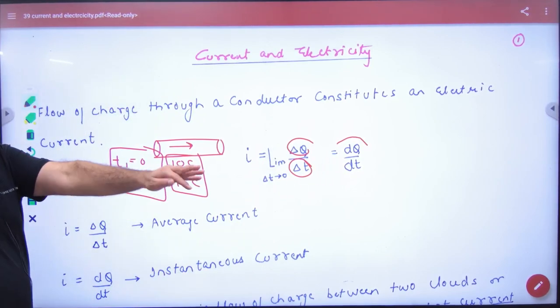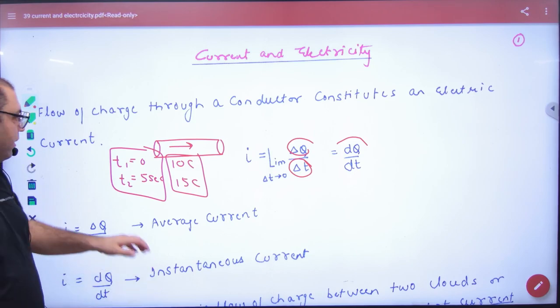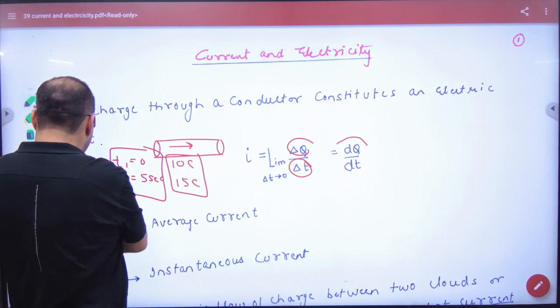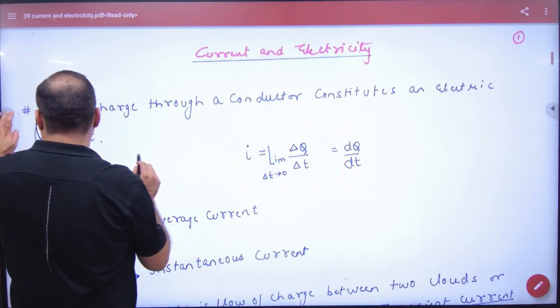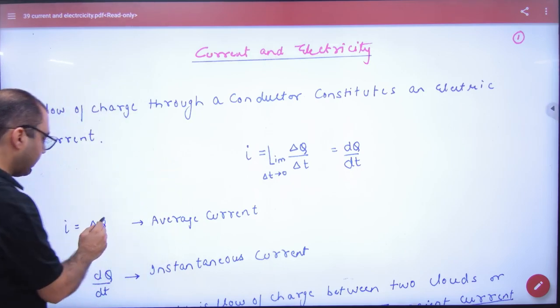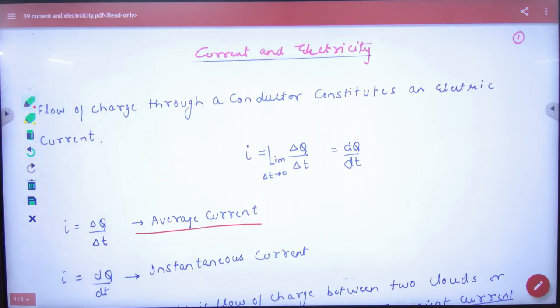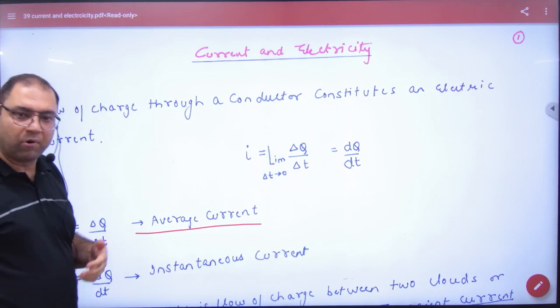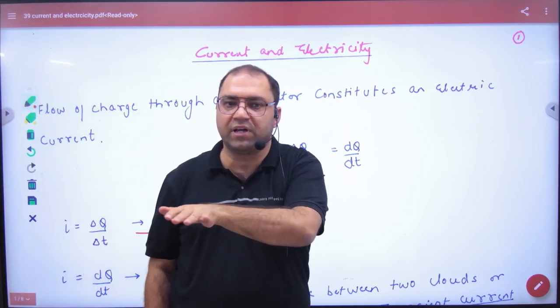So this we call it average current. Delta q by delta t, what is it called? Average current. But the problem is that charge sometimes varies with time.